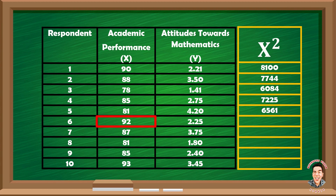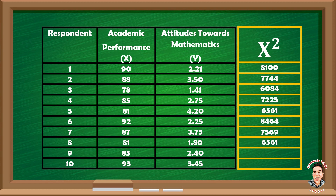Continuing: 92 squared equals 8,464; 87 squared equals 7,569; 81 squared equals 6,561; 85 squared equals 7,225; and 93 squared equals 8,649.